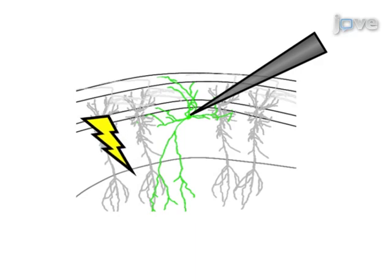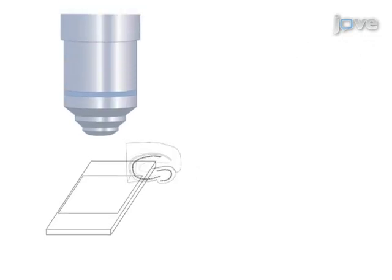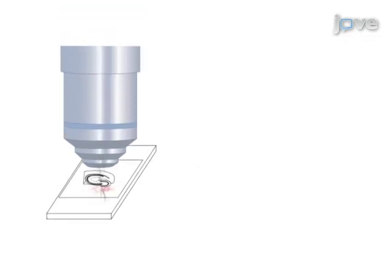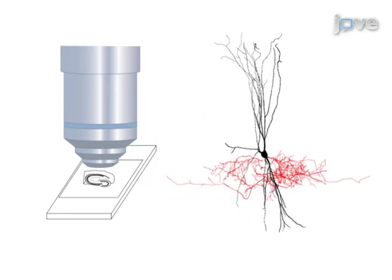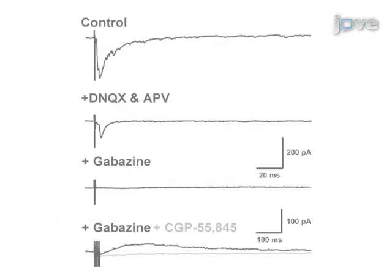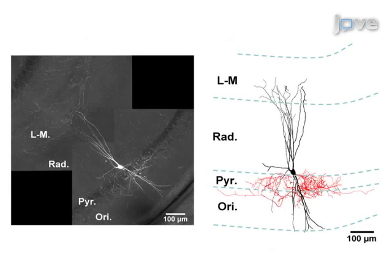Either extracellular stimulation or paired recordings are used to examine GABA-B receptor-mediated effects. The final step is to visualize the neurons and confirm that the recorded neurons are in fact parvalbumin-positive and are either parasomatic or dendritic inhibitory neurons. Ultimately, this method enables the characterization of GABA-B receptor-mediated inhibitory effects.